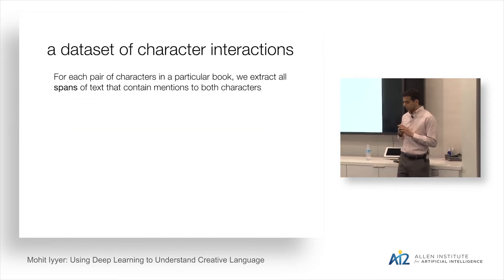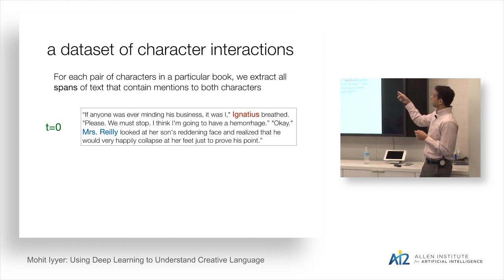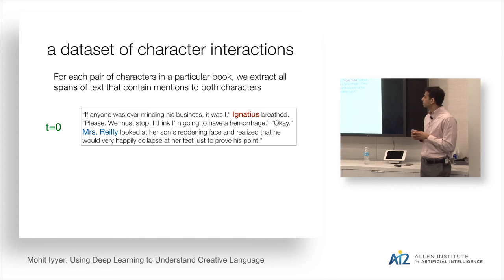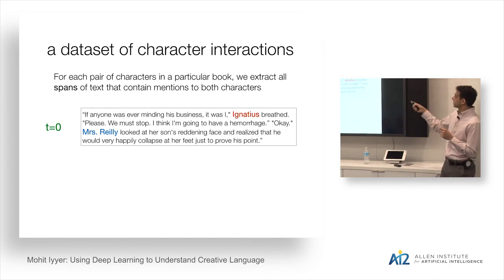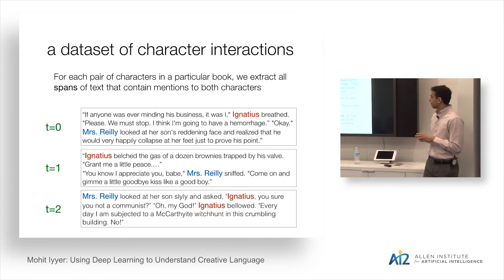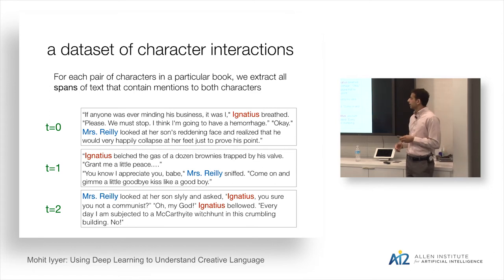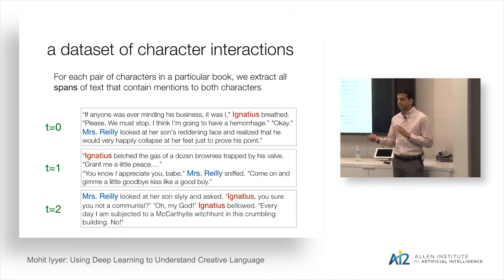For our dataset, we take about 1,500 novels and for every pair of characters extract all spans of text in which they interact — defined by having a mention, including co-references to both characters. For example, the relationship between Ignatius and Mrs. Reilly in A Confederacy of Dunces. We define the relationship as the sequence of these spans. We want to learn a trajectory over the sequence, as well as relationship states globally shared across all relationships in the dataset — about 20,000 unique relationships and 400,000 spans.